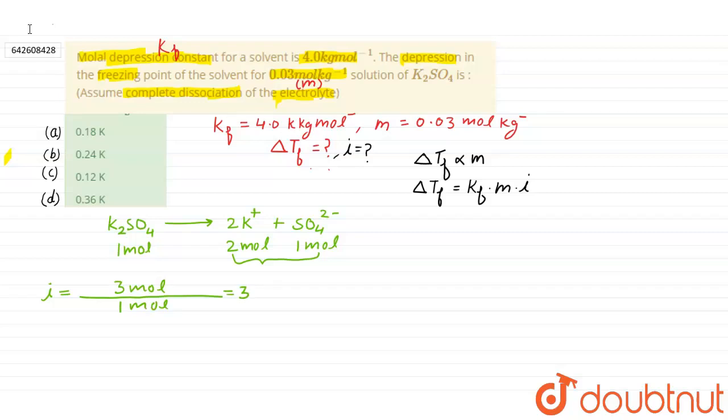Okay, if we place all values in this formula, what is Kf? 4.0 Kelvin kilogram mole inverse into what is molality? 0.03 mole kilogram inverse and what is van't Hoff factor? 3.